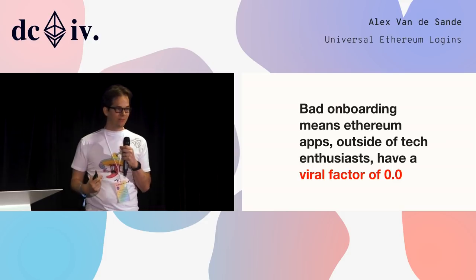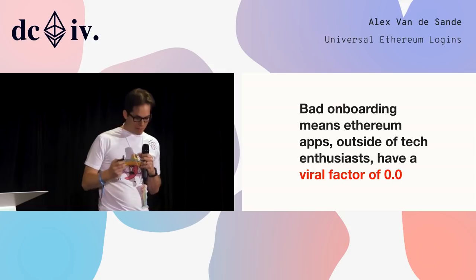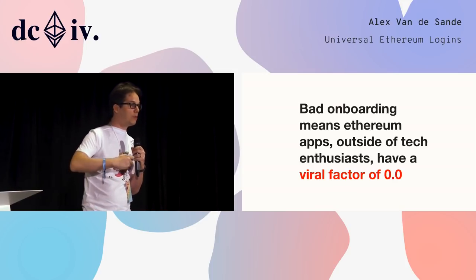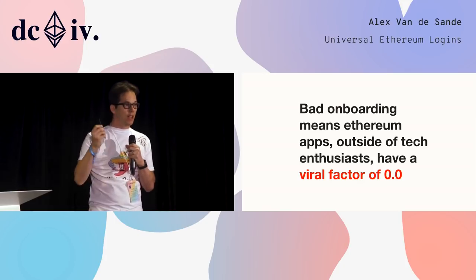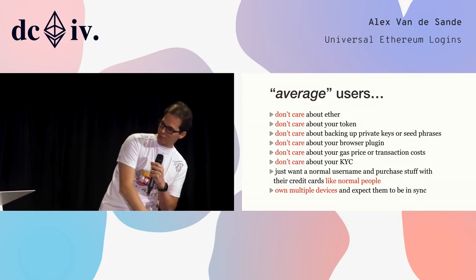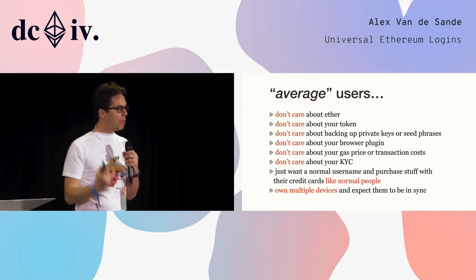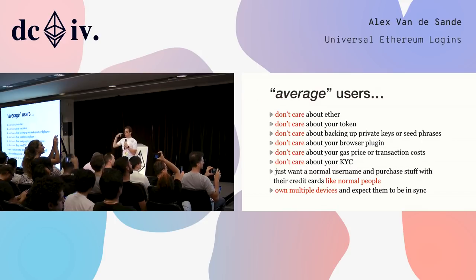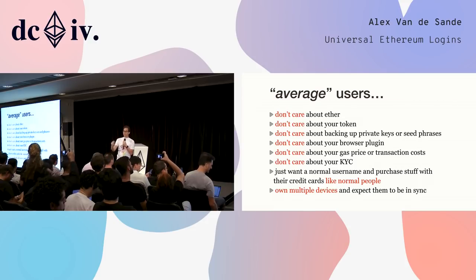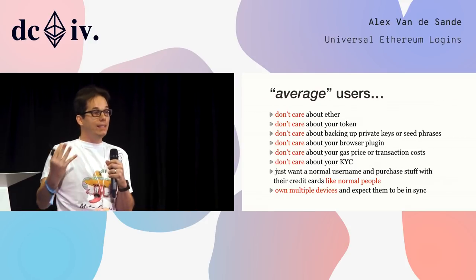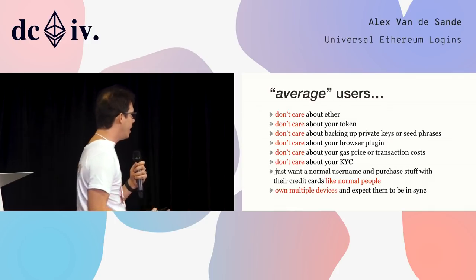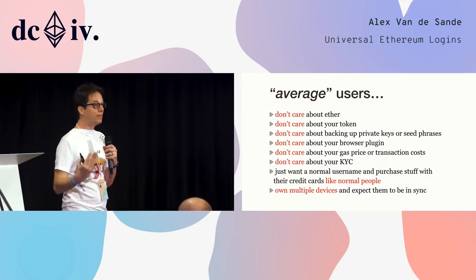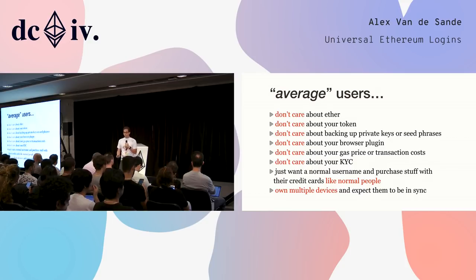If you want to reach people beyond tech enthusiasts who go to conferences, we need to reach normal people. Normal users don't care about ETH, your token, your ICO. They just want a username. They just want to use an email. If they're going to buy something, why can't they use a credit card? They don't understand why they can't. And users expect to be able to use multiple devices with the same account — something they take for granted, and it's super hard for us to do.